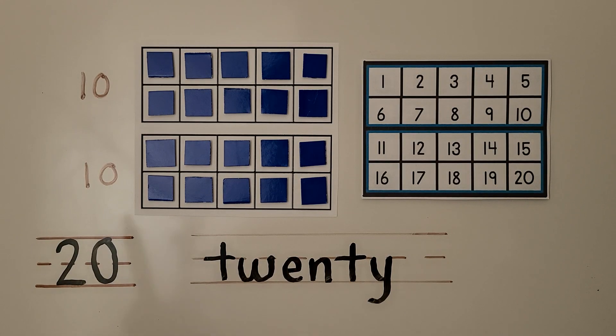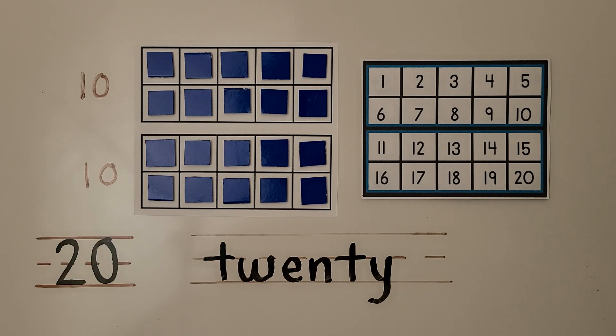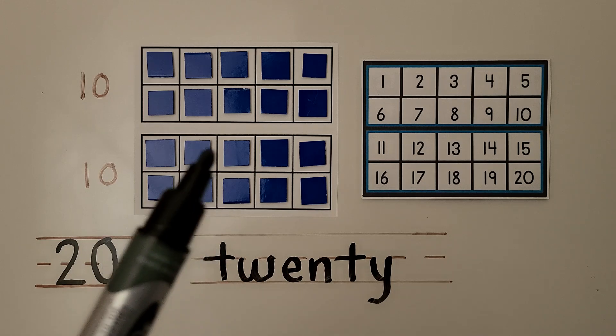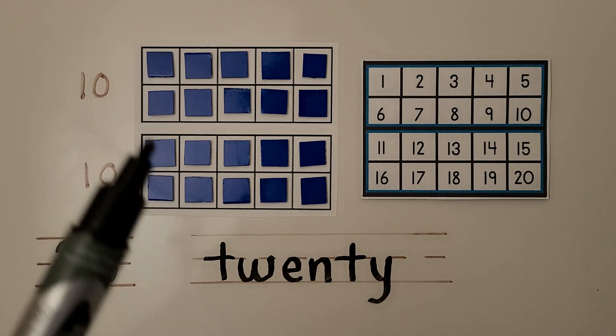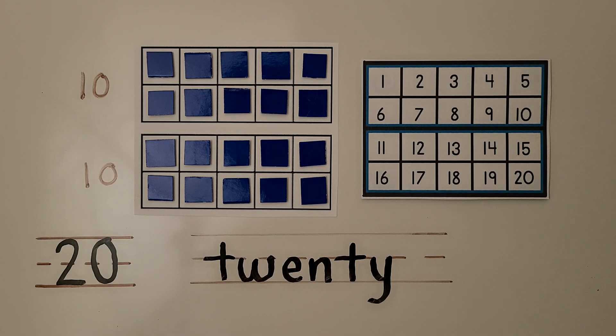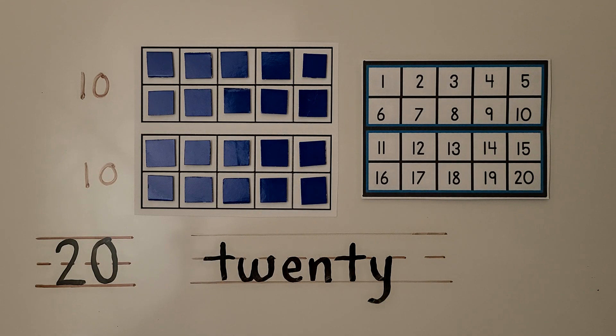Here we have two full ten frames. We have 10 ones and 10 more ones. We have two sets of 10. All the spaces are full on both ten frames. See how they're all full with counters? There are 20 counters in all.